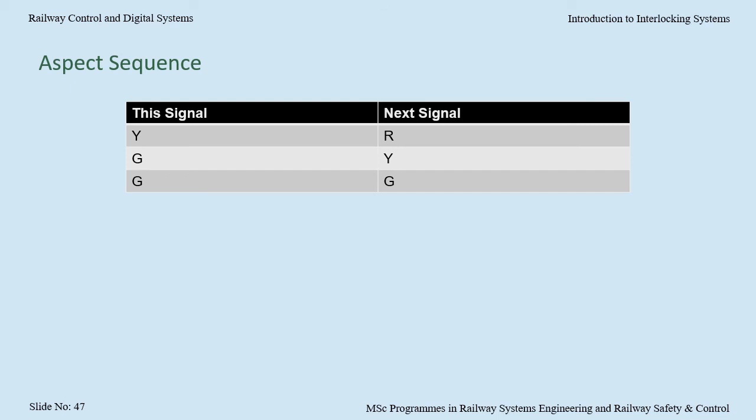By this stage we have proved everything required to allow the signal to clear to something other than red. But what should it clear to — yellow, green? This depends on the aspect sequence used by your railway. A typical yellow-green-red sequence would result in something like this on the control tables: when the next signal is showing red, we would show yellow on this signal; when the next signal is showing yellow or green, we would show green. Many railways prove that the next signal is lit, proving it doesn't have a blown bulb. If the next signal is not lit, this signal is typically restricted to red. The driving and proving of various enforcement systems such as AWS, TPWS and train stops are included in this area, but this is heavily railway-dependent.